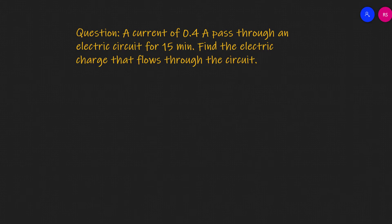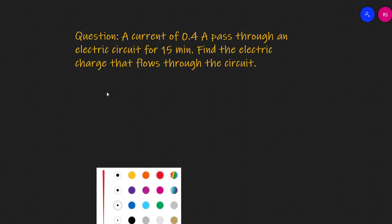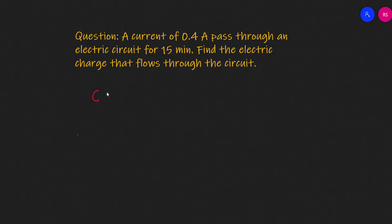A current of 0.4 Ampere passed through an electric circuit for 15 minutes. Find the electric charge that flows through the circuit. You can see that the current is 0.4 Ampere. The time is 15 minutes, and we note that units are very important when working with time.